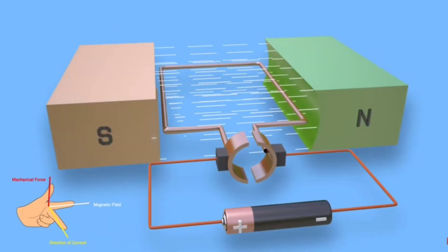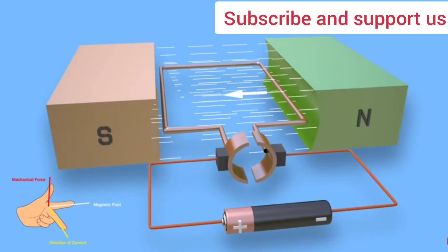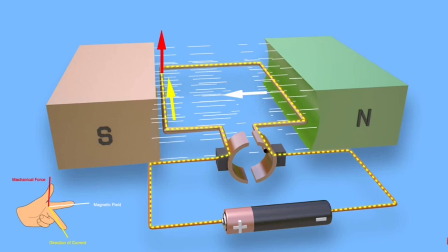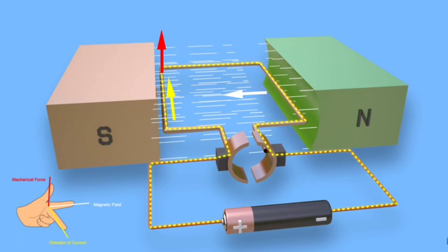If the forefinger is aligned in the direction of the magnetic field from north pole to south pole, and the second finger is aligned in the direction of current in the left side conductor, then the thumb indicates the direction of mechanical force. This is clearly upward here.